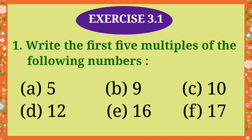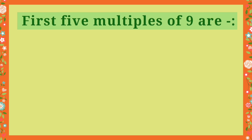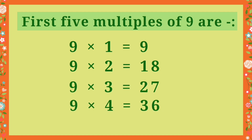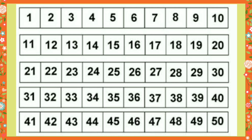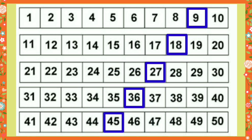Dear students, now let's solve part B of question 1. The number is 9. So, we need to find the first 5 multiples of 9. For this, we'll multiply 9 with numbers 1 to 5. And this way, the first 5 multiples of 9 are 9, 18, 27, 36 and 45. So, you can see, it is very easy to find the multiples. Now, dear students, let's find out the multiples of 9 on a number chart. The multiples of 9 are 9, 18, 27, 36 and 45. Very good. It means you have completely understood the concept of multiples.